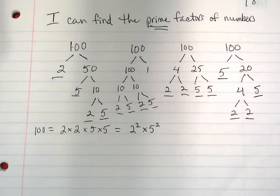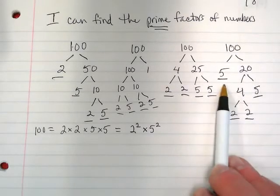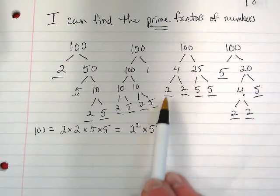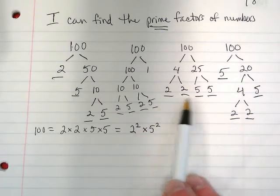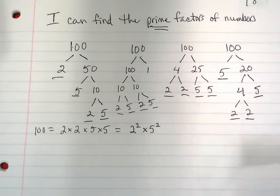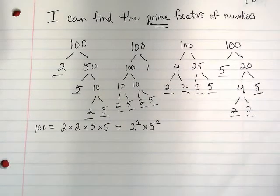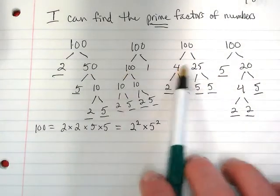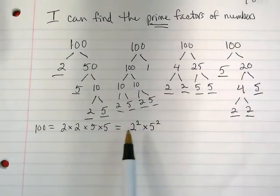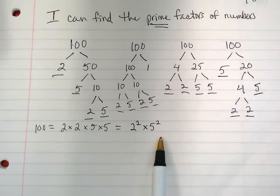And look at those trees. They're all different, aren't they? Okay. This one stops here but this branch keeps going. This one goes straight across like it's a tree that just got pruned, right? And that works great. We've proven that the prime factors of one hundred, no matter how we start, no matter what two factors we started with, it always came down to two twos and two fives, right?